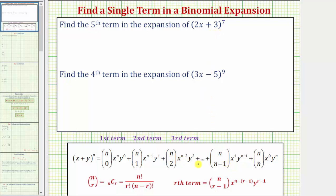There's a formula we can use to find the r-th term in the expansion of the quantity x plus y raised to the power of n, where the r-th term equals n choose r minus 1 times x raised to the power of n minus (r minus 1) times y raised to the power of r minus 1. This formula is not easy to remember, so looking at patterns can make it much easier to find a single term in a binomial expansion.